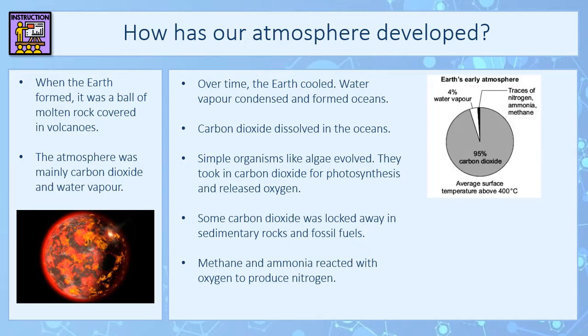Here are two pie charts. The top one shows the earth's early atmosphere: 95% was carbon dioxide, 4% water vapour, and then trace amounts of nitrogen, ammonia and methane. The surface temperature was above 400 degrees, which is why we couldn't have liquid oceans as we recognise today.